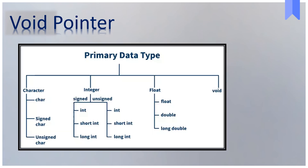If we talk about various primary data types provided by C, void is one among them. We use void type normally as a return type of a function that does not provide a result value to its caller function. And with regards to the pointer, we use void type to declare a universal pointer, which can point to any data type.